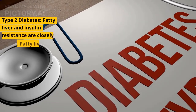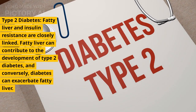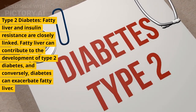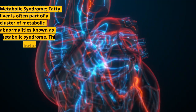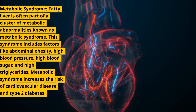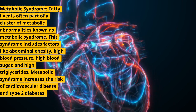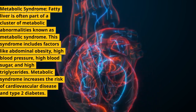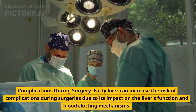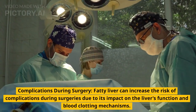The metabolic abnormalities often seen in individuals with fatty liver — such as insulin resistance and high cholesterol — contribute to cardiovascular risk. Type 2 diabetes: fatty liver and insulin resistance are closely linked, and fatty liver can contribute to the development of type 2 diabetes; conversely, diabetes can exacerbate fatty liver. Metabolic syndrome: fatty liver is often part of a cluster of metabolic abnormalities including abdominal obesity, high blood pressure, high blood sugar, and high triglycerides, which increases cardiovascular and diabetes risk.